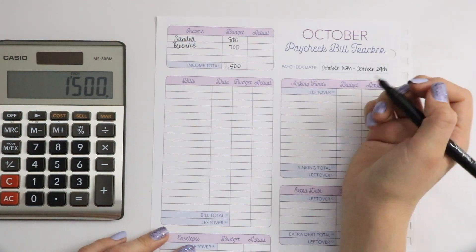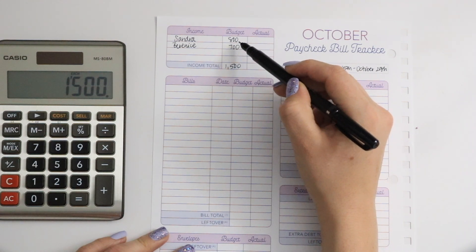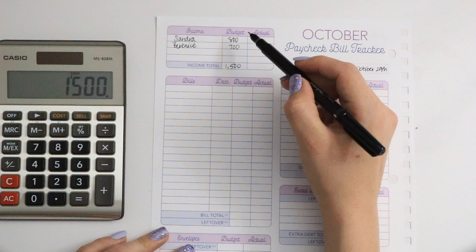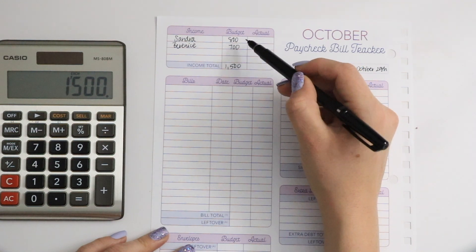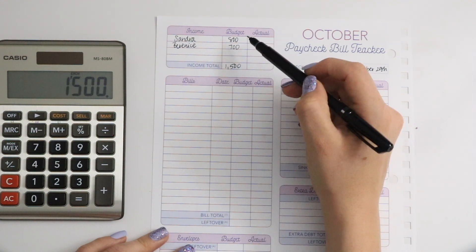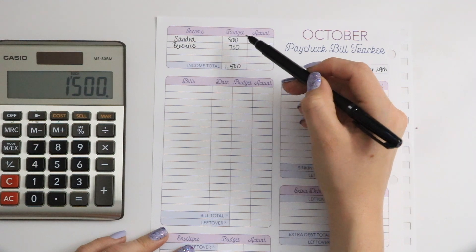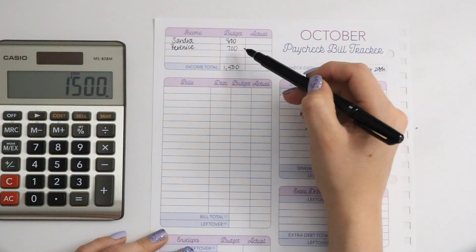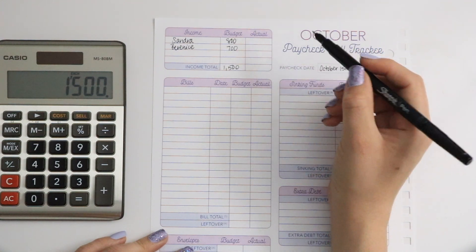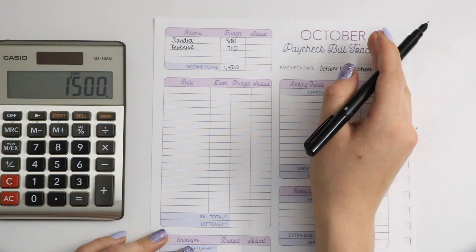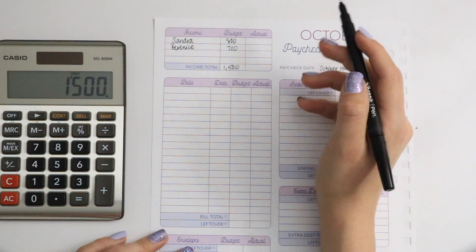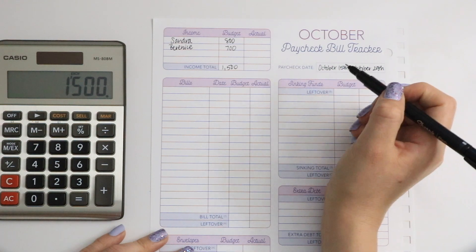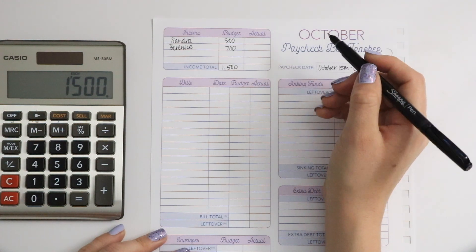Just to clarify, this is not our actual paychecks. This is just the amount that we contribute to our joint account. Sandra's paycheck is higher than $800 and mine is definitely bigger than $700. I just have my own separate account that I keep and so does she. That's why we add this much towards our joint account.